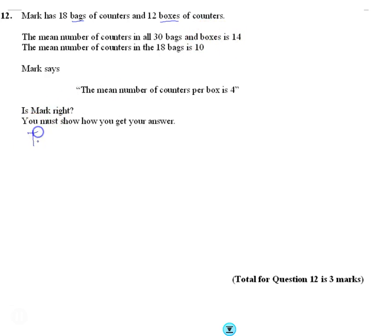Therefore we know that the total counters is going to be 30 times 14. Actually how many counters there are. Well, 3 fourteens are 42, so that's 420 counters. There's 420 counters overall.